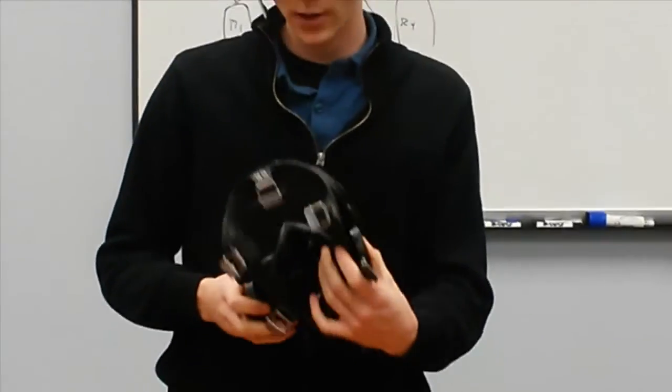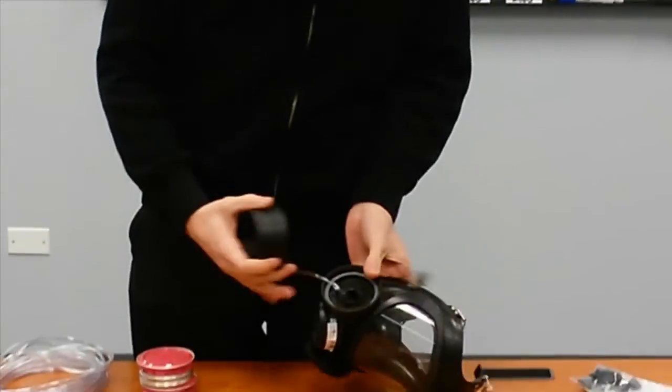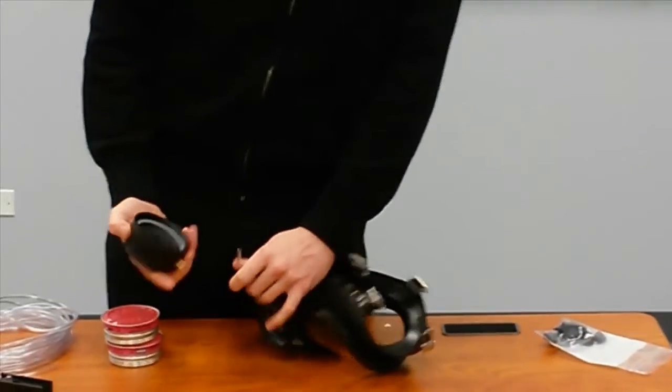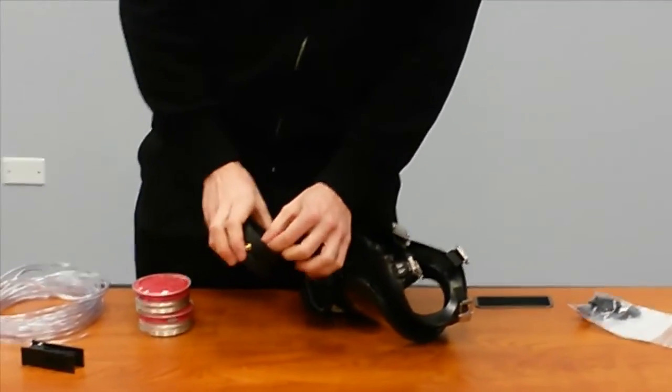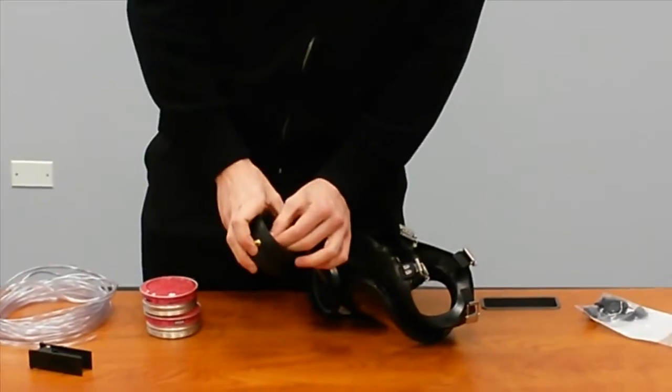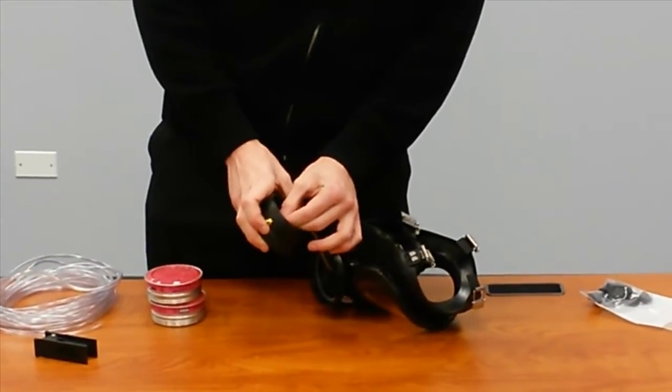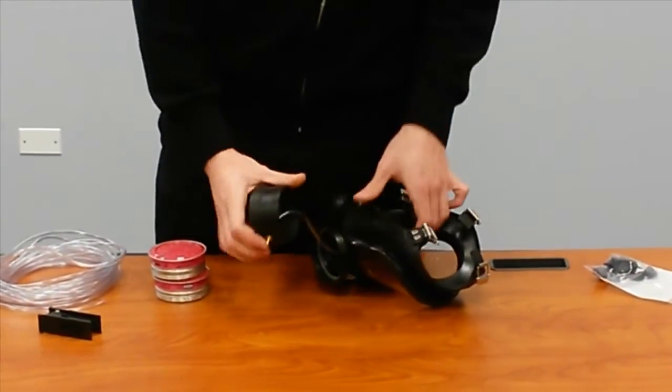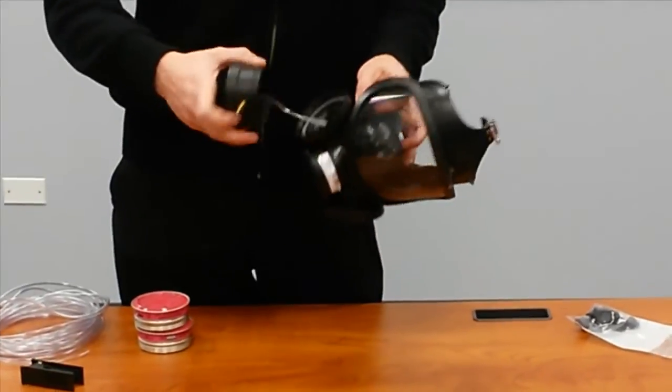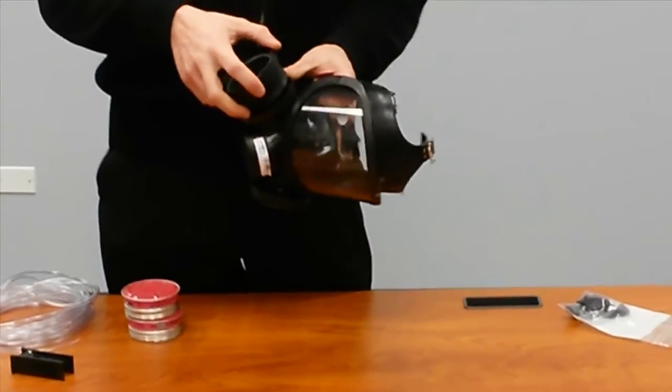Now that's attached, you can go ahead and attach the probed adapter piece to the tubing. Once you have that attached, you can attach the adapter piece to the mask.